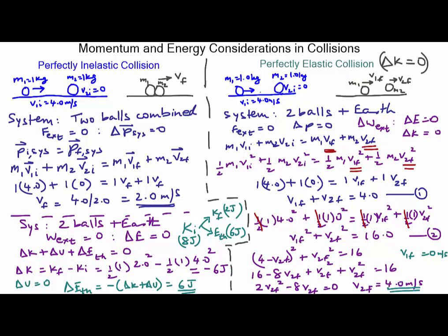So what happens in a perfectly elastic collision of two equal masses when one is at rest: they simply exchange velocities. The first ball comes to rest and the second ball moves forward with the same velocity the first ball had just before the collision. You've probably seen this with Newton's Cradle.